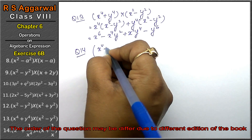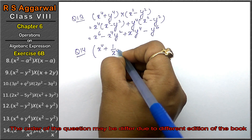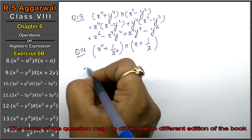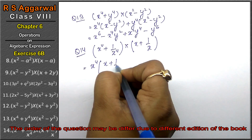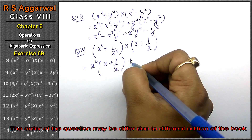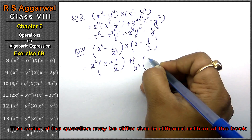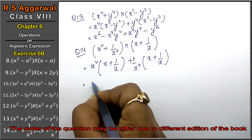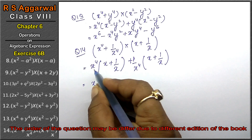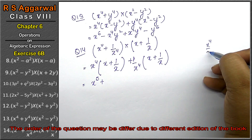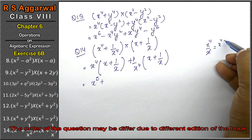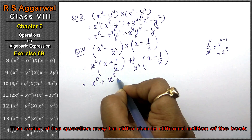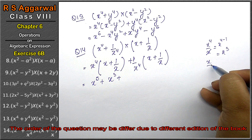Let's do question number fourteen of Exercise 6B, that is algebraic expressions. Question number fourteen is (x to the power 4 + 1 upon x to the power 4) multiplied by (x + 1 upon x). So: x to the power 4 multiplied by (x + 1 upon x), plus 1 upon x to the power 4 multiplied by (x + 1 upon x). We get x to the power 5, plus x to the power 4 upon x which simplifies to x cubed.